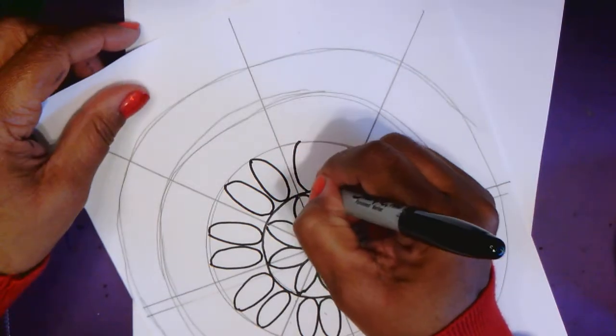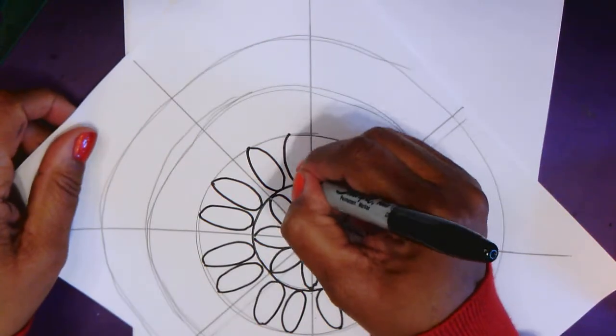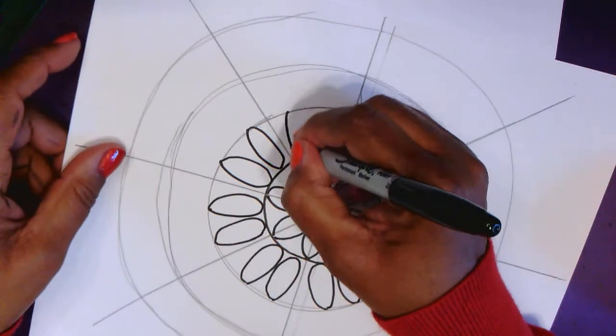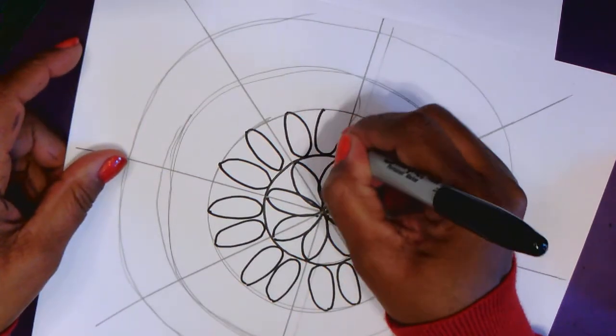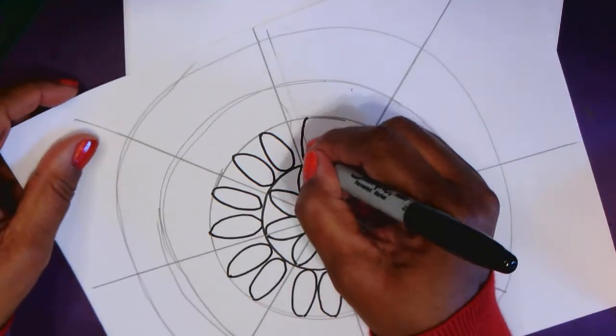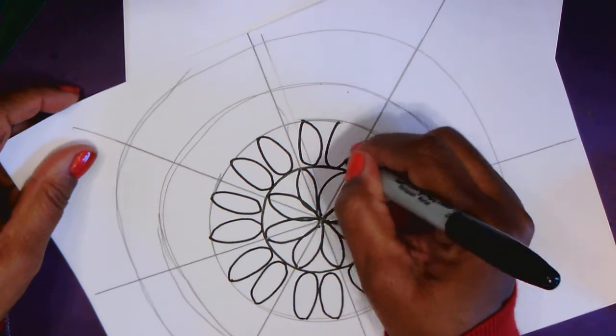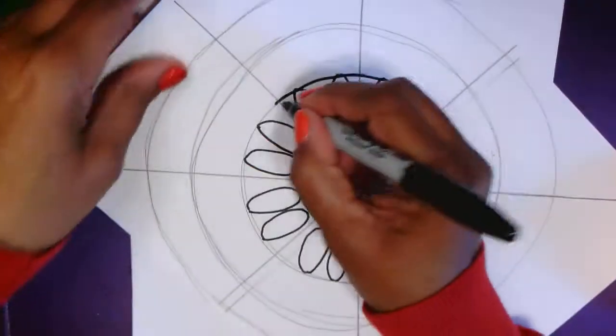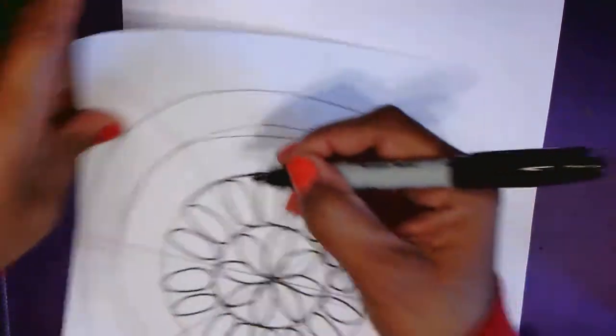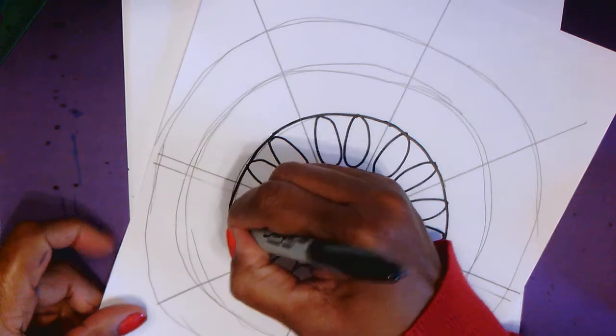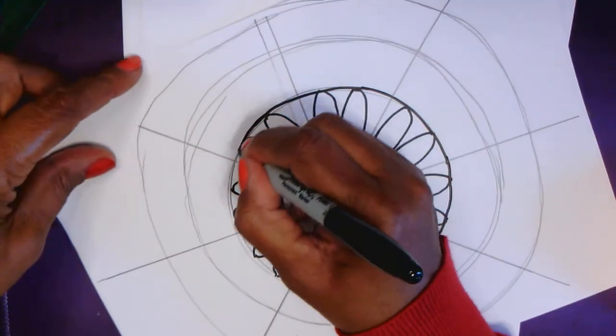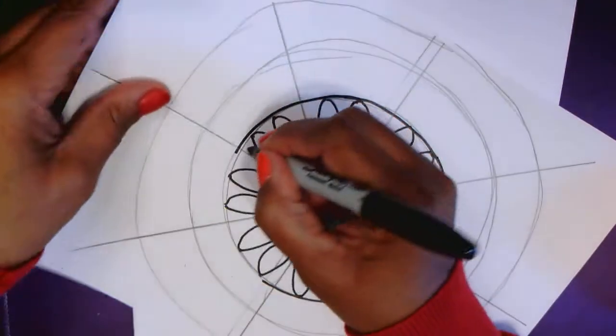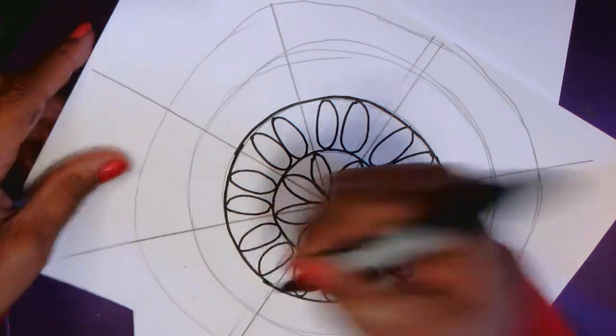Okay, so I'm putting ovals in each of these spaces. There we go. And I want to keep this line, so I'm going to trace it. Remember, at the end, I can erase all the pencil lines I don't need.